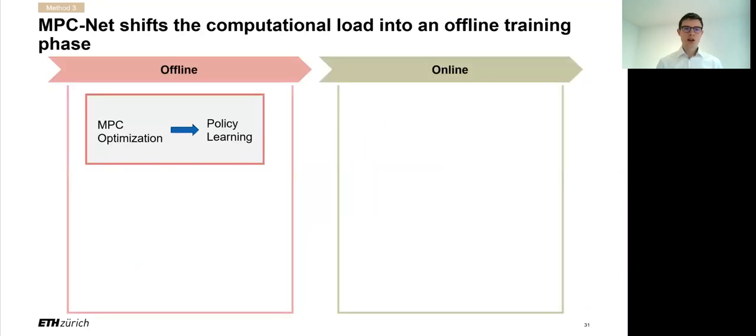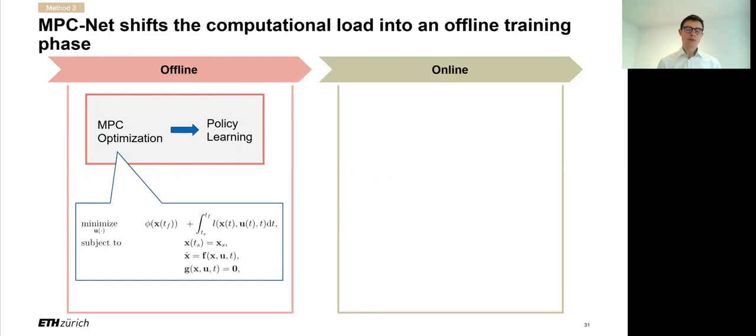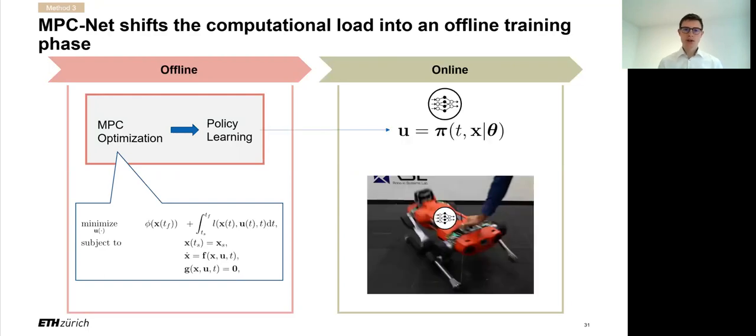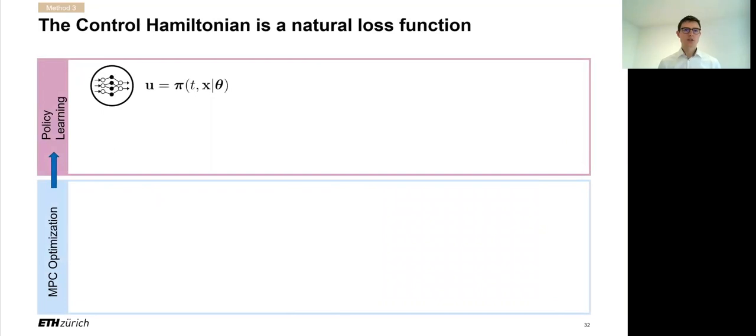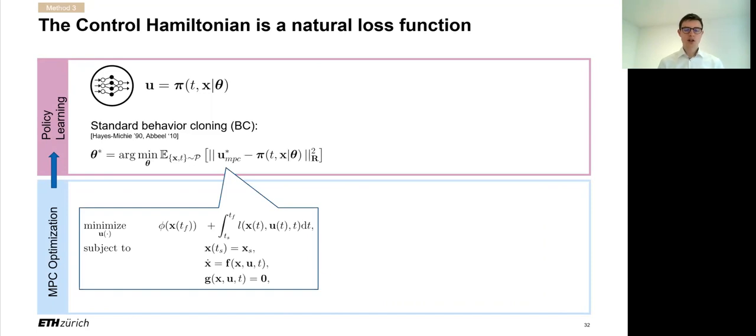So what we did is devise an algorithm we called MPCnet, which acts in an offline and an online phase. In the offline phase, we extract the optimal controls into a neural network policy, where this training data comes from solving the optimal control problem that we've seen in one of the two methods. Then online, we just deploy this neural network on the robot, which is of course much faster than solving the original optimal control problem. Let's dive a little bit deeper into how this offline phase proceeds. The standard way of training a neural network from demonstrations is behavioral cloning, as some of you might have heard before. And behavioral cloning is based on minimizing a Euclidean distance between the demonstrations and the learned policy, where of course here the demonstrations are again given by the optimal control. But this loss function has a number of problems.